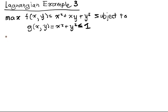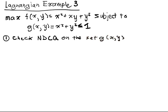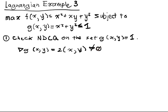The first thing we'll typically do is check the non-degenerate constraint qualification on this boundary. The gradient of g at point (x, y) is going to be equal to 2x and 2y, which is not going to equal zero if g of x, y equals 1, because the point is on the unit circle. So the constraint qualification has been satisfied.